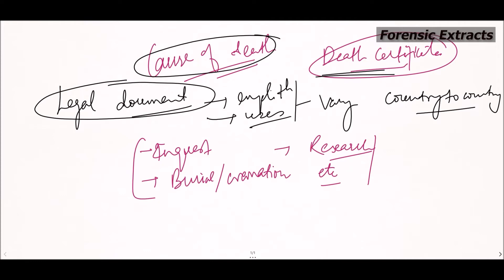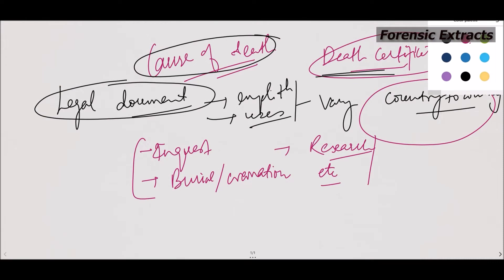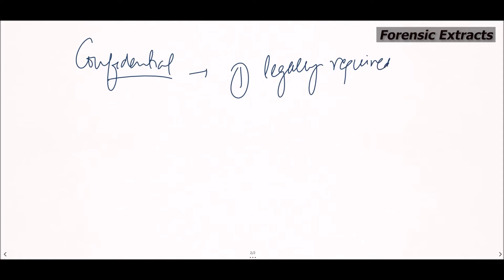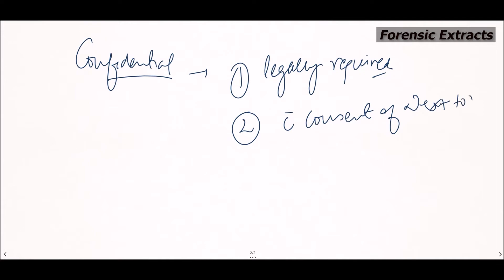Death certificate is a confidential document. Ideally a doctor should not disclose all the details, but if these details are legally required, then the doctor can disclose them. Alternatively, the doctor can disclose with consent of the next of kin. So these are the situations in which the doctor can disclose the details mentioned in the death certificate.